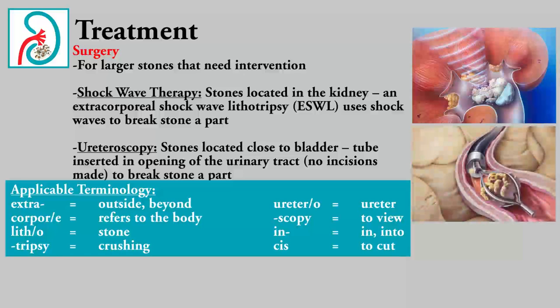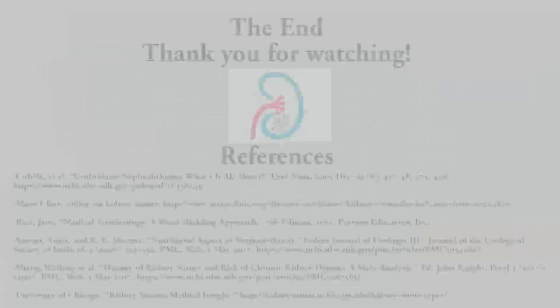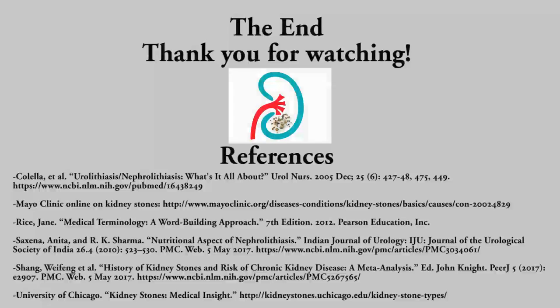Ureteroscopy is intended for stones located close to the bladder, so that a surgeon can insert a tube through the opening of the urinary tract — no incisions or cuts are made in the body — and break up and remove the stone fragments bit by bit. This concludes my project on nephrolithiasis. Thanks so much for watching, and below are my references.